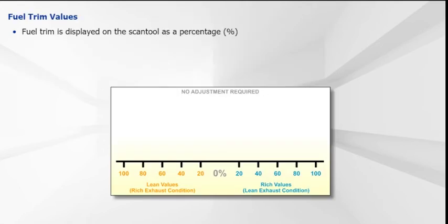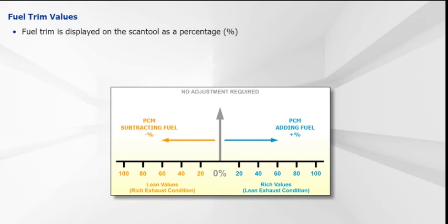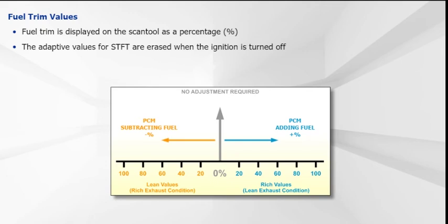Fuel trim is displayed on the scan tool as a percentage. These values are based on the input signals from the upstream oxygen sensor or sensors in closed-loop. Zero percent indicates that the mixture is balanced and no adjustment is required to the pre-programmed injector pulse width. A negative percentage indicates that the PCM is reducing injector pulse width to compensate for a rich exhaust, while a positive percentage means that fuel is being added to compensate for a lean exhaust. The adaptive values for STFT are erased when the ignition is turned off. In contrast, LTFT values are stored in the computer's memory and remain there until the PCM's memory is reset with a scan tool or continuous battery power is removed from the PCM.